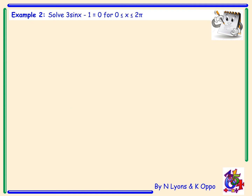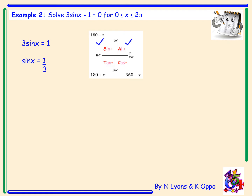Example 2. Solve 3sin x − 1 = 0 for x lying between 0 and 2π. Rearranging gives sin x = 1/3. From our CAST diagram we're looking for angles in the first two quadrants. Since 1/3 is not an exact value, you will need to change your calculator to radian mode. Doing inverse sine of 1/3 gives an answer of 0.34.